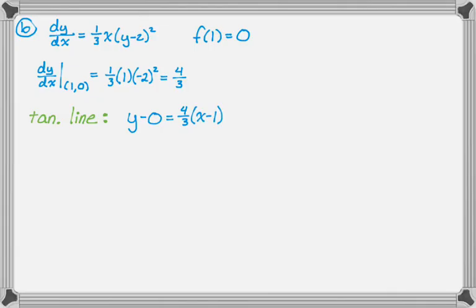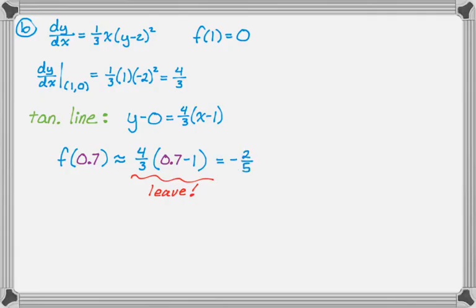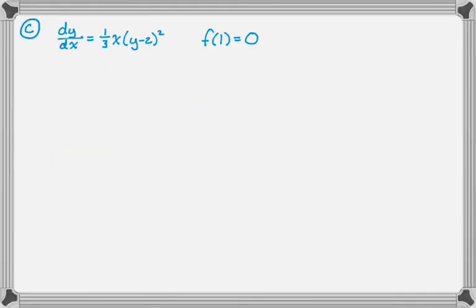And then we want to use this to approximate f of 0.7. So f of 0.7 is approximately, we're just going to plug in 0.7. So it's 4 thirds times 0.7 minus 1. You should actually leave this because there's no reason to simplify on the exam, but I really like to simplify, so I'm going to say that this is negative 2 fifths. All right, so that's part B, and we're on to part C, which if you want to guess, you'd probably be right, is to solve the differential equation.